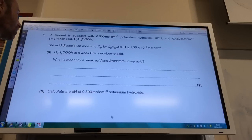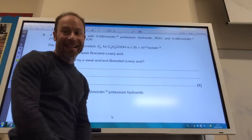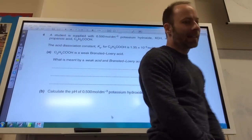And it gives me the acid dissociation constant of propanoic acid. It's a weak Bronsted-Lowry acid. What is meant by a weak acid and a Bronsted-Lowry acid?